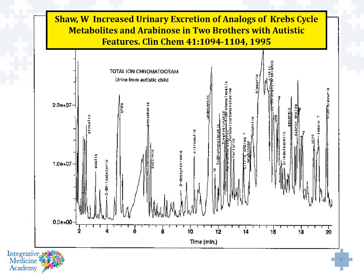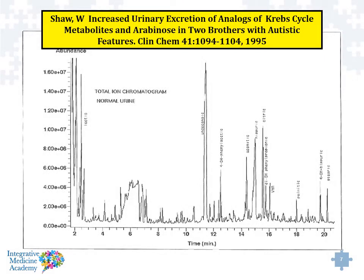Dr. Bill Shaw, who formed Great Plains Lab, got his start many years ago looking at organic acids in children with inborn errors of metabolism. He started working with individuals with autism and found that when they analyzed their urine, many autistic children had very high levels of certain organic acids. When they looked at neurotypical children, they had some organic acids, but not as many as the autistic kids. When they started analyzing what these chemicals were, they found that in a large number of autistic individuals there was a high amount of organic acids linked to yeast, including Candida, as well as bacterial toxins.